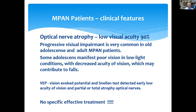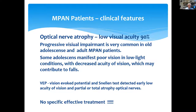A very important clinical feature in these patients is optic nerve atrophy with low visual acuity in 90% of patients. We observe progressive visual impairment, which is very common in older adolescents and adult patients. Some adolescents manifest poor vision in low light conditions with decreased acuity, which may contribute to falls. We use visual evoked potentials and the Snellen test to detect early low acuity, and partial or total optic nerve atrophy is still progressive.